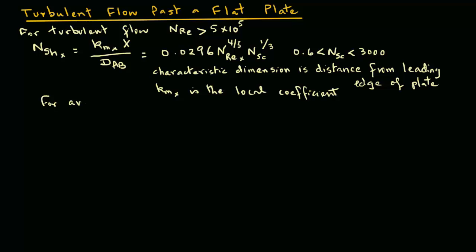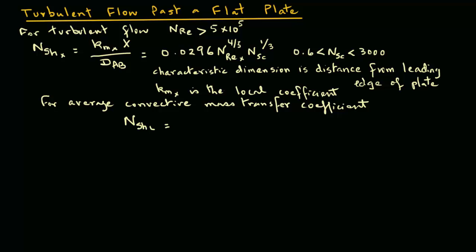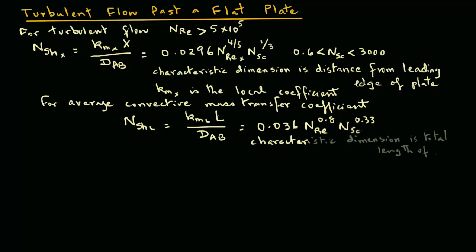For the average convective mass transfer coefficient in turbulent flow over a flat plate, the Sherwood number N_SH,L equals K_ML times L divided by D_AB, and that equals 0.036 times Reynolds number raised to power 0.8, times Schmidt number raised to power 0.33. Note that the characteristic dimension is the total length L.